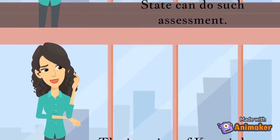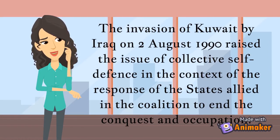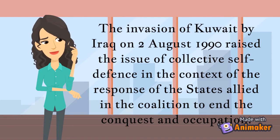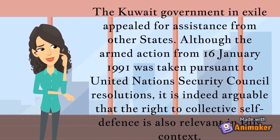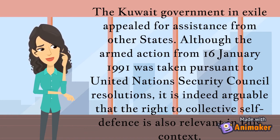For example, the invasion of Kuwait by Iraq on August 2, 1990 raised the issue of collective self-defense in the context of the response of the states allied in the coalition to end the conquest and occupation. The Kuwaiti government in exile appealed for assistance from other states. Although the armed action from January 16, 1991 was taken pursuant to United Nations Security Council resolutions, it is arguable that the right to collective self-defense is also relevant in this context.